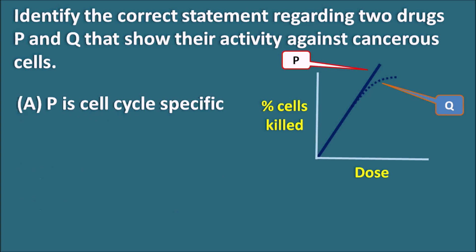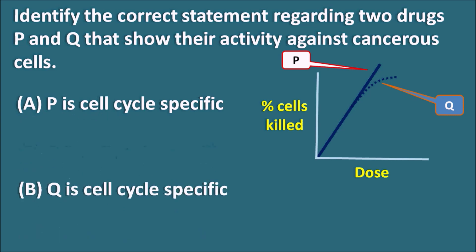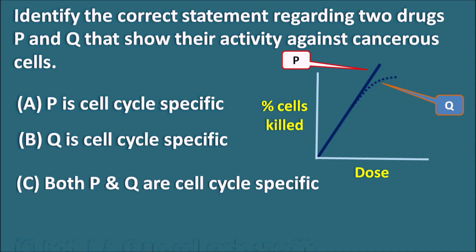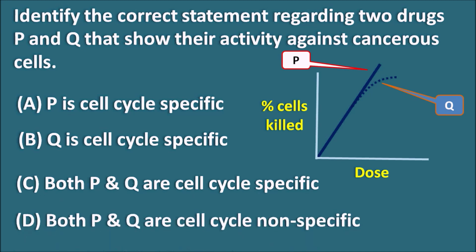B — Q is cell cycle specific. C — both P and Q are cell cycle specific. D — both P and Q are cell cycle non-specific. By just seeing this picture we have to identify which is the cell cycle specific agent and which is the cell cycle non-specific agent.